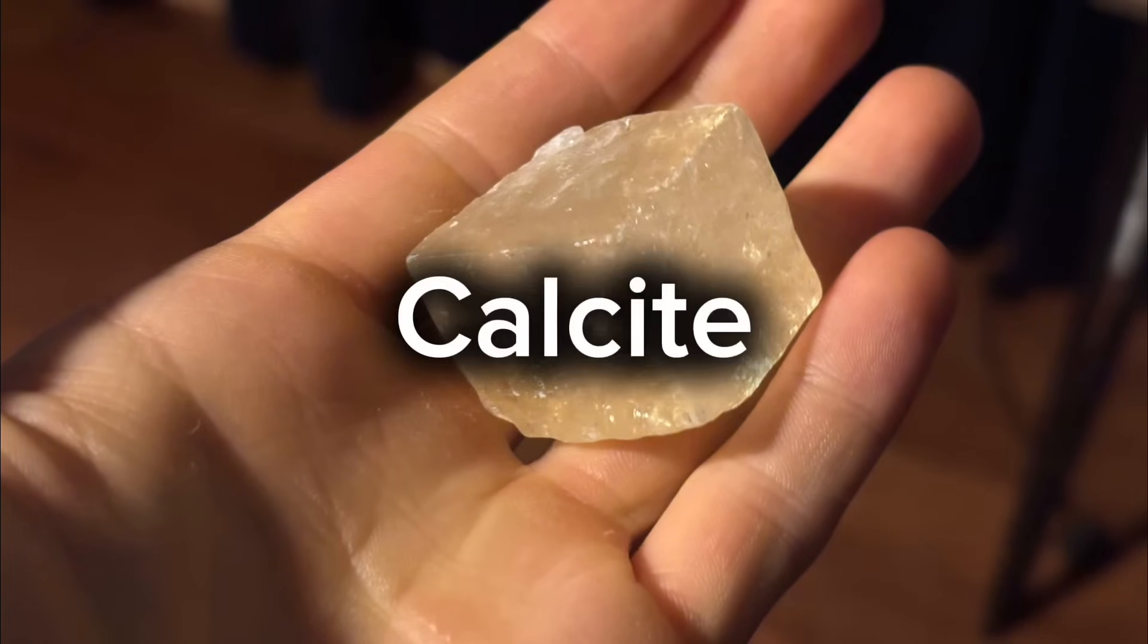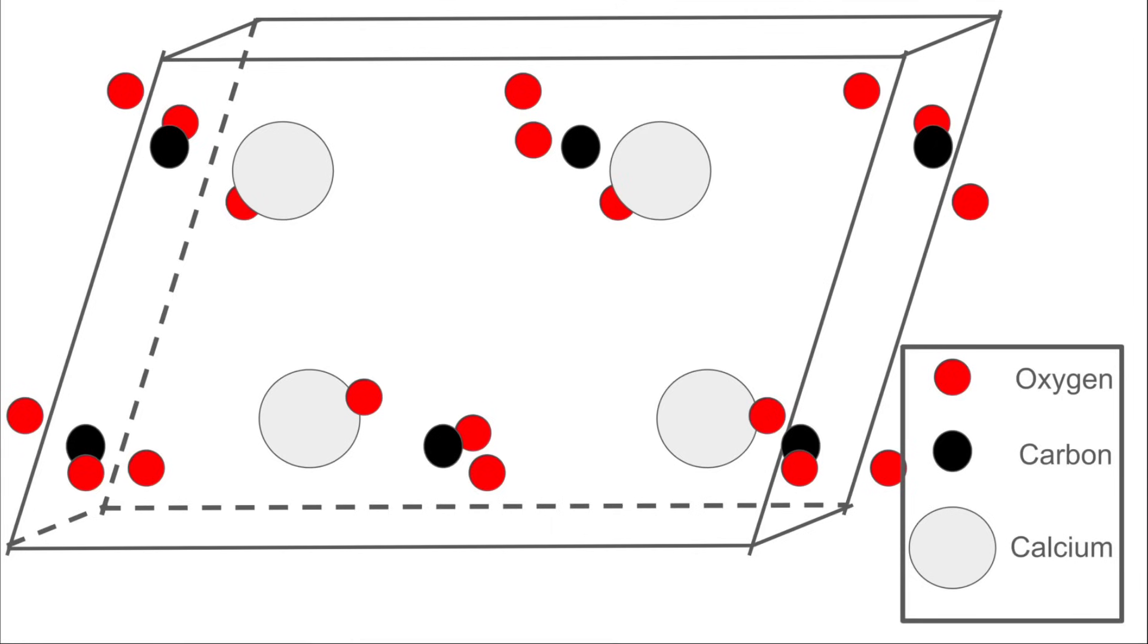We know that this rock is calcite, or calcium carbonate. And this is a simple drawing of the crystal structure of calcium carbonate. The structure itself is not too relevant in explaining the mechanism on a surface level. But what I want you to notice here is that we have three different elements: calcium, oxygen, and carbon.